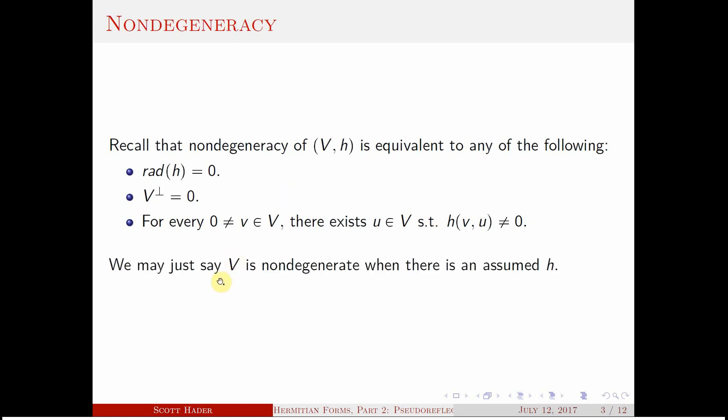Another way of saying that is that every non-zero element has some other element with which it pairs to be something non-zero. That's what it means to be non-degenerate. We're just going to say that the vector space is non-degenerate, with there being an assumed form — the form is non-degenerate means the same thing.